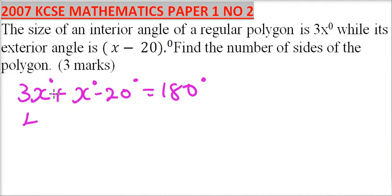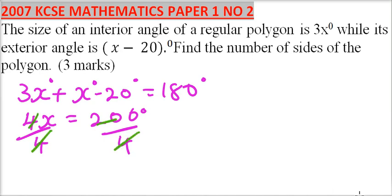So we have 4x is equal to 200 when we move negative 20 to the right side. Divide by 4, and you should be able to get x is equal to 50 degrees.